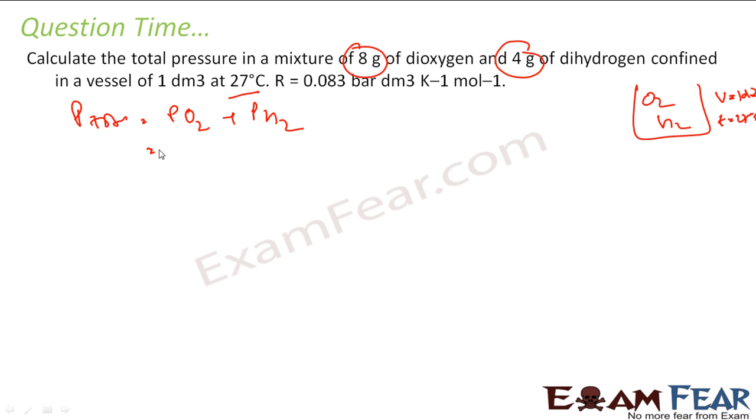So the pressure of oxygen will be what? P is nothing but nRT by V. What is n? n is nothing but my mass by molar mass into RT by V. So here my R is constant, T is constant, V is constant. So I can say that this is nothing but my mass of oxygen by molar mass of oxygen into RT by V plus mass of hydrogen by molar mass of hydrogen into RT by V.